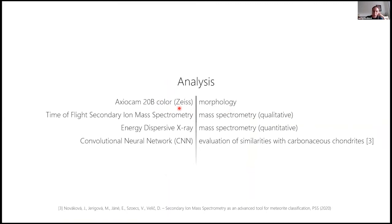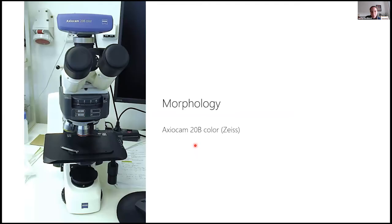So to the analysis, we performed a morphological and mass spectrometry analysis. The morphology was done by an optical microscope and the mass spectrometry was qualitative as well as quantitative. We compared the results from the qualitative analysis with six carbonaceous chondrites which are included in a neural network we designed, so we had also the information if these compositions are similar to these carbonaceous chondrites.